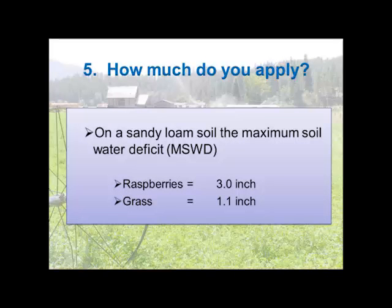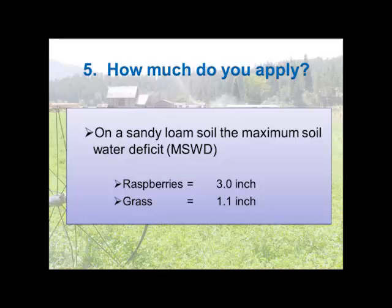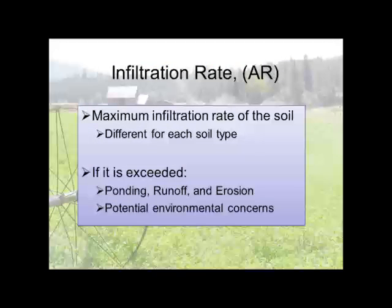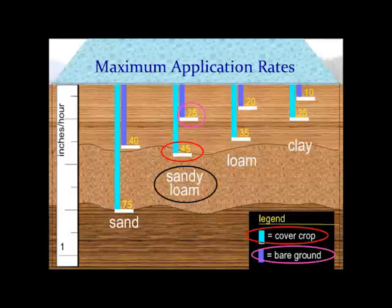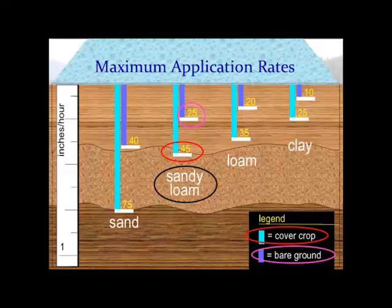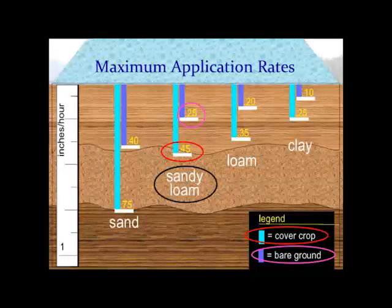Raspberries can store three inches, grass 1.1 inch — that's what we can store in the soil. To determine your application rate: it equals 96.3 times the flow rate of a full circle sprinkler divided by the spacing of your sprinklers. Sandy soil lets water in at a very high rate but can't store much, whereas clay can store a lot but can't accept it quickly — ranging from 0.25 to 0.75 inches per hour intake depending on soil type and cover crop.